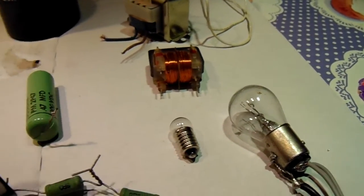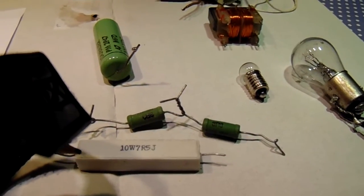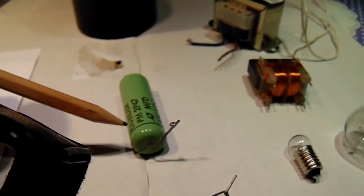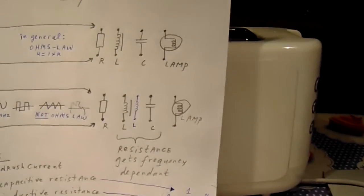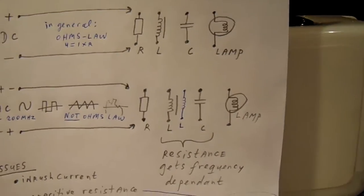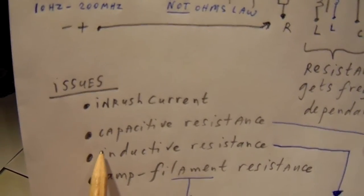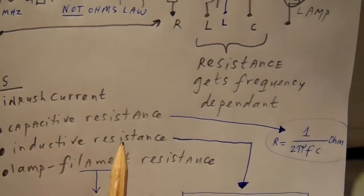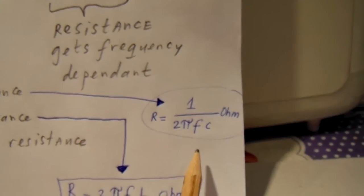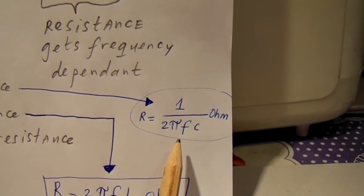And here we don't have that problem. And also with resistors we don't have that problem, but with capacitors we have another problem. So capacitors have a capacitive resistance, and this is the formula, and you can see that there is a relation to the frequency.